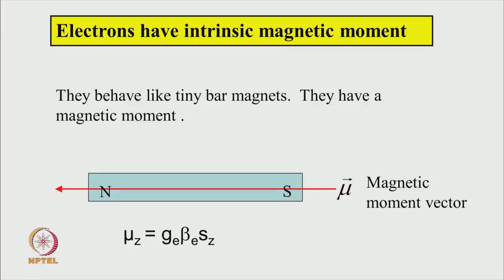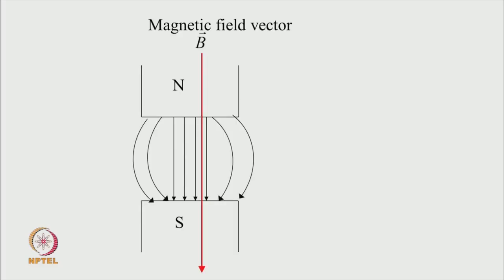The origin of magnetic moment and angular momentum are intimately related. The relation is given by: mu_z equals G_e times beta_e times S_z, where mu_z is the component of the magnetic moment vector in a given direction, G_e is a proportionality constant called the g-factor, beta_e is the Bohr magneton, and S_z is the component of spin angular momentum. The magnetic field is also a vector quantity, showing the direction of field lines from north pole to south pole.